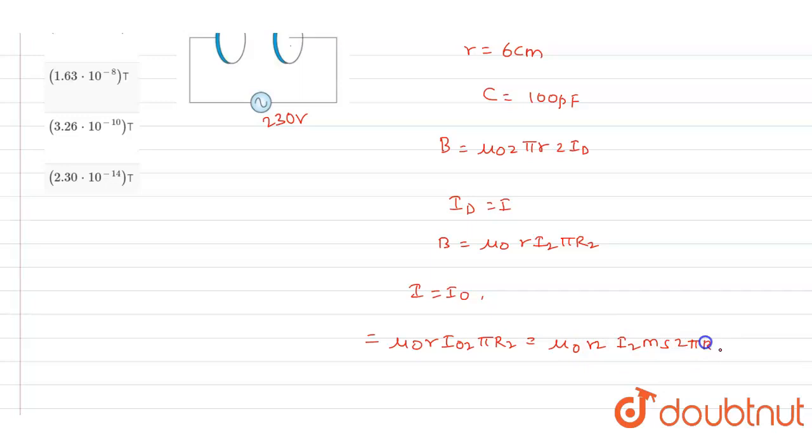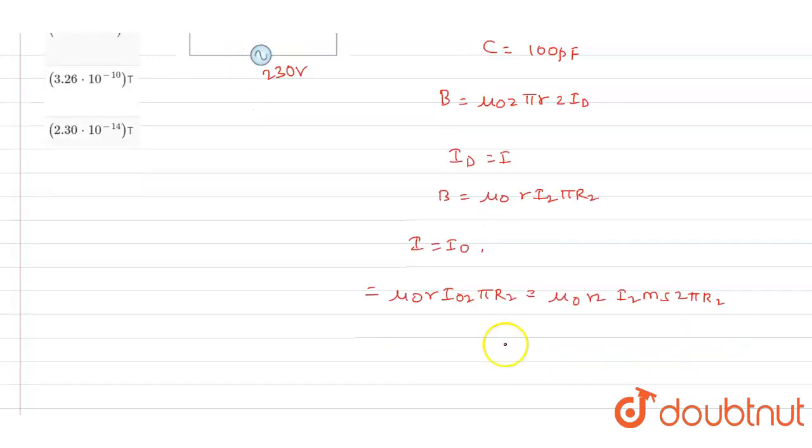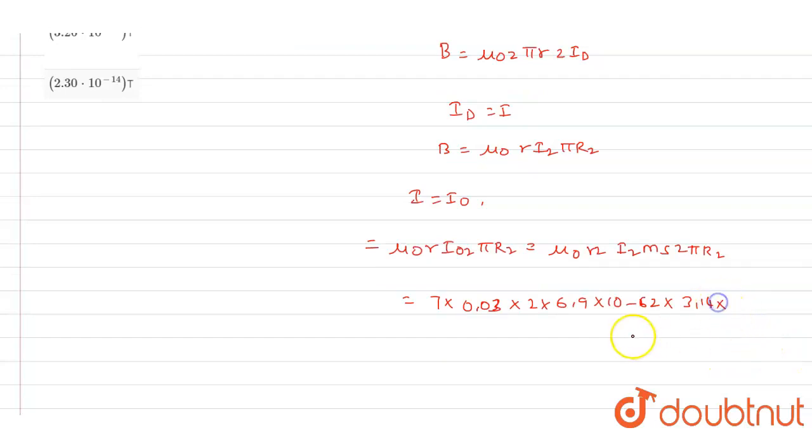That will be equal to mu naught times r squared times I naught divided by 2 pi r squared. So here we can write the values as 4 pi times 10^-7 times 0.03...